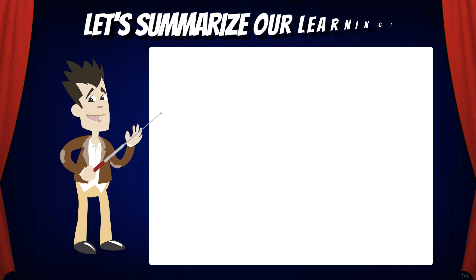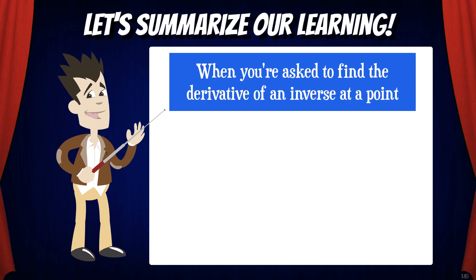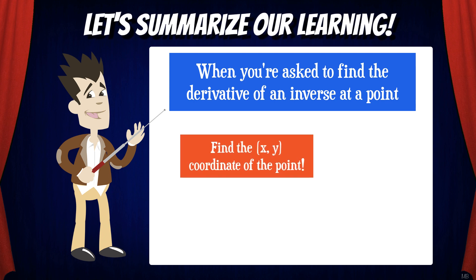So let's summarize what we've learned. When you're asked to find the derivative of an inverse at a point, the first thing you want to do is find the x and y coordinate of the point on the function and on the inverse. Use inverse properties to help you with this.